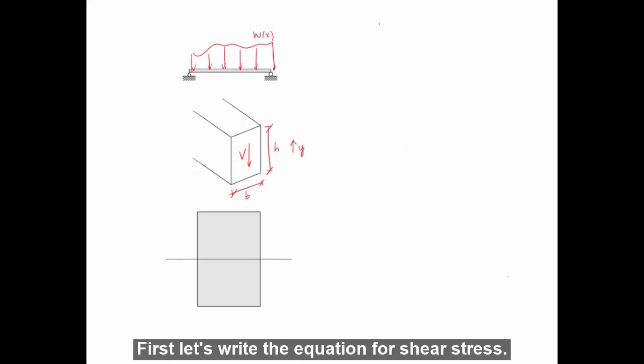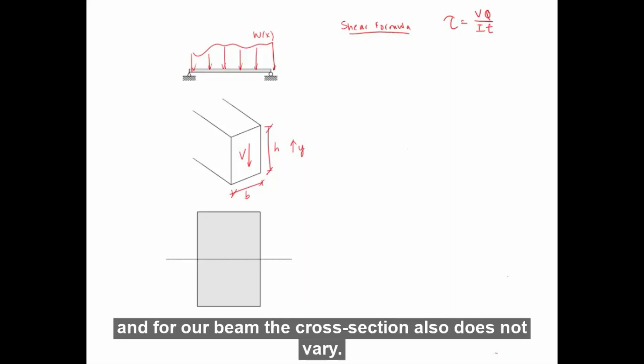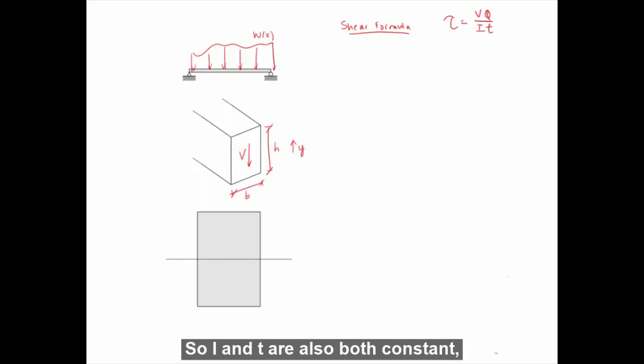To determine the distribution of shear stress across the height of this cross section, we can apply the shear formula to calculate shear stress at an arbitrary height of Y. First let's write the equation for shear stress. The shear formula is τ equals VQ over IT. So for this problem, V is constant, and for our beam the cross section also does not vary. So I and T are also both constant, which means that these three terms are constants, which leaves us with Q, which varies with Y.